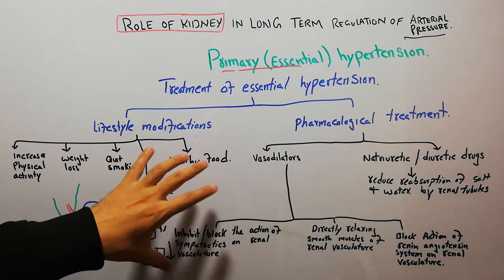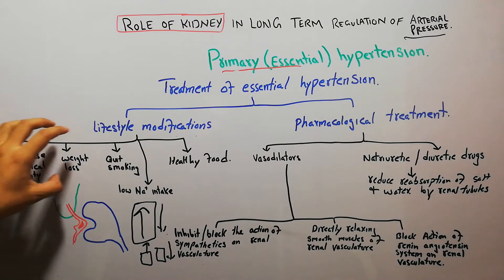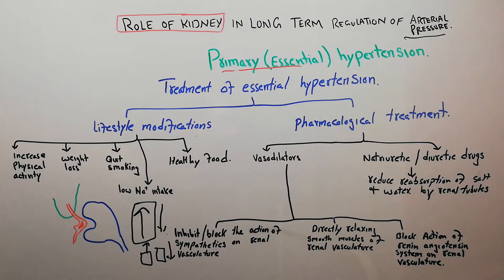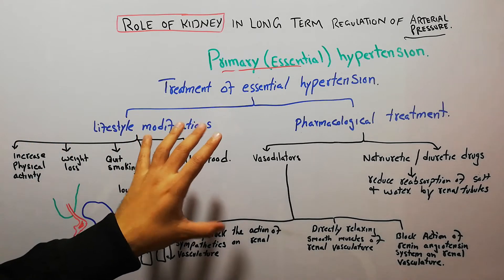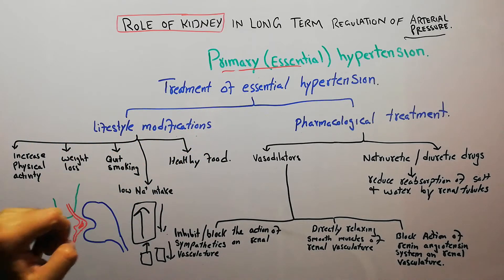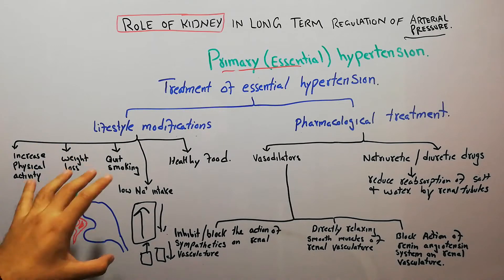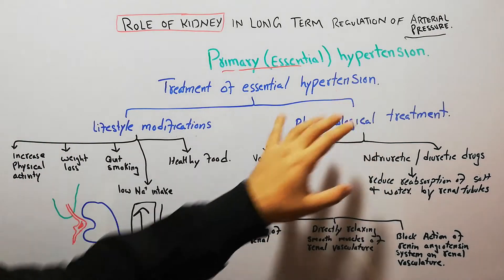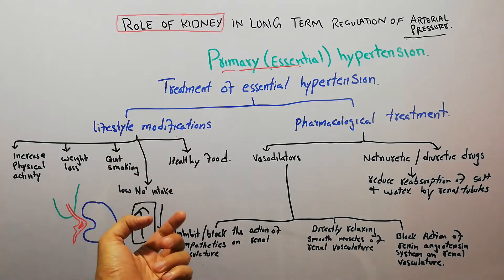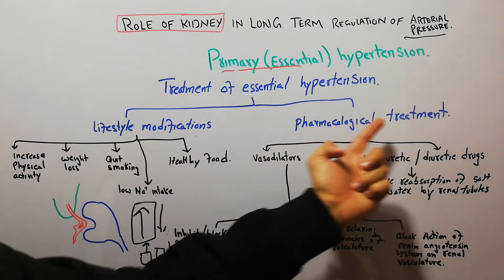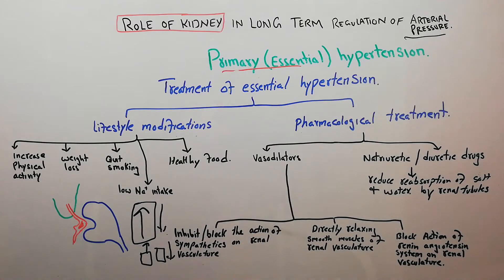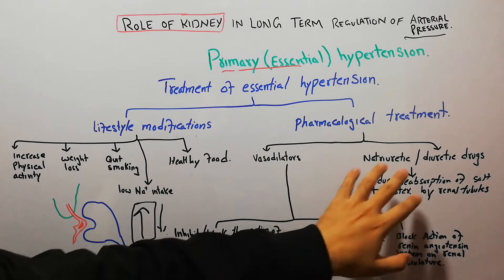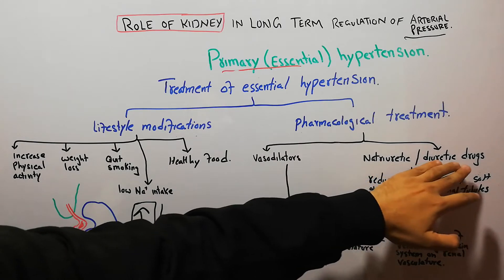If a person is unable to decrease hypertension with lifestyle modifications, there are different pharmacological treatment options available. These are broadly classified into vasodilators and natriuretic and diuretic drugs.